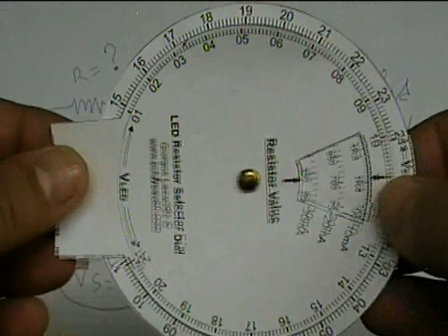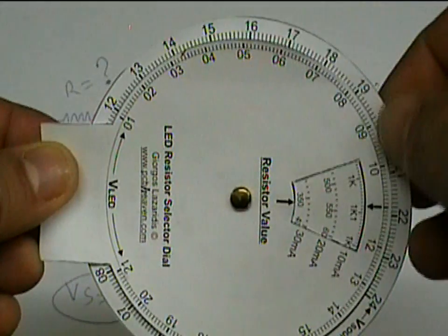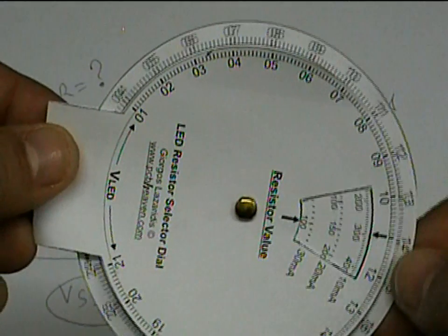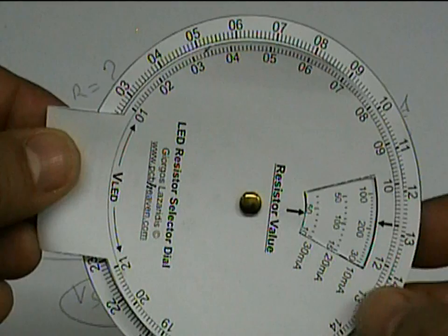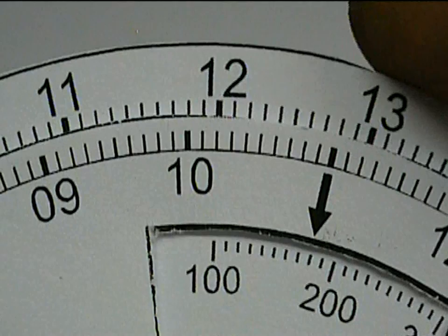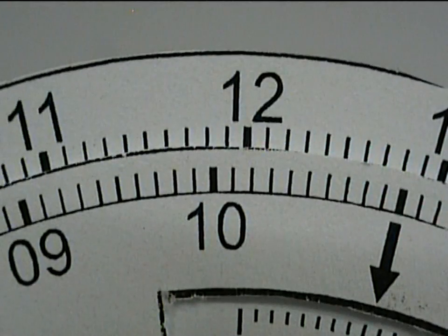Holding the selector like this we rotate the external wheel and we align the source voltage with the LED voltage that we named before. So we align 12 volts on the external wheel with 10.2 volts on the internal wheel.